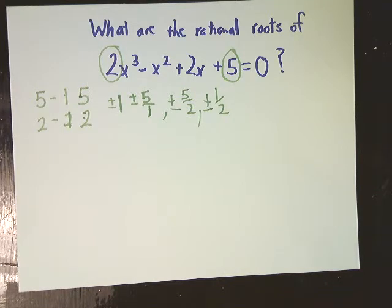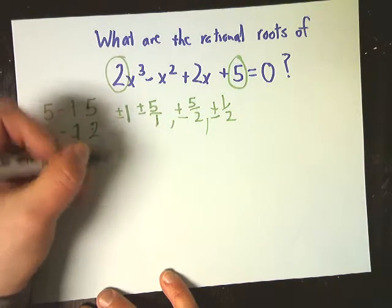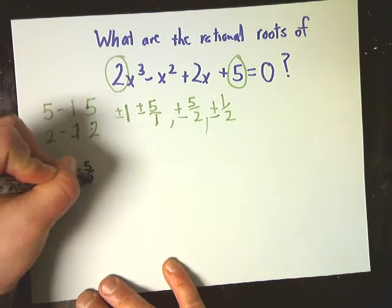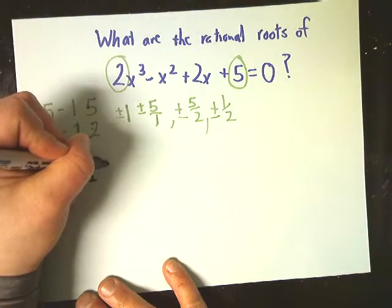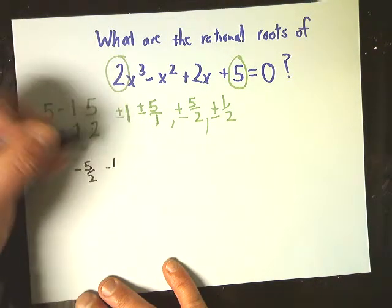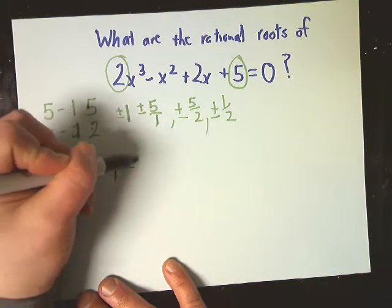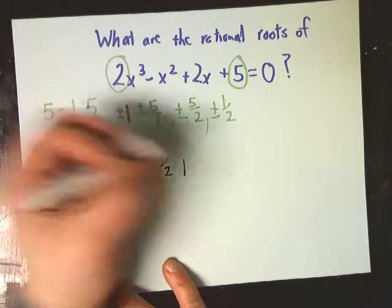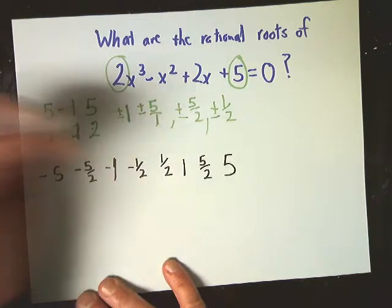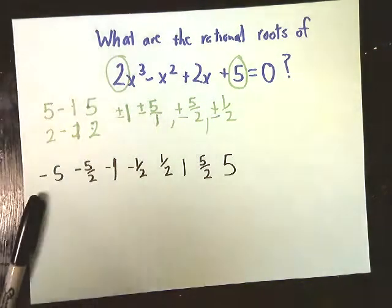From there, you plug them in to see what actually works. It's easier if you make a little chart. You could list: -5/2, -5, -1, -1/2, and on your way up, 1/2, 1, 5/2, and 5. All I'm going to do is plug these numbers in for x to see if they give me 0. Starting with negative 5 — and make sure you put it in parentheses when you type it in, otherwise it'll give you some weird answer.